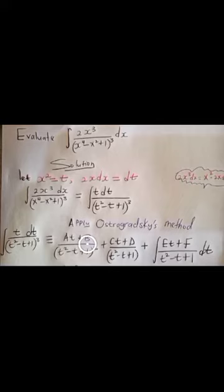Ostrogradski's method says: if the integral is in this form, you express the function in partial fractions. There is a slight difference here because of the integral sign. When expressing this in partial fractions, you first write at plus b. If the denominator were t cubed you would write at squared plus bt plus c, but since the degree is two, we only have two constants in the numerator.